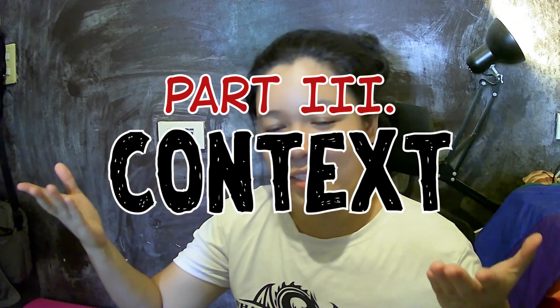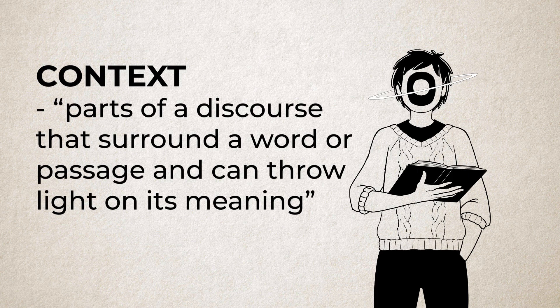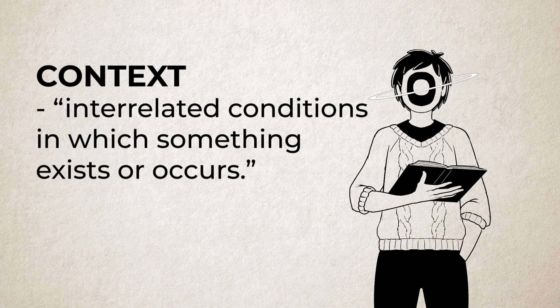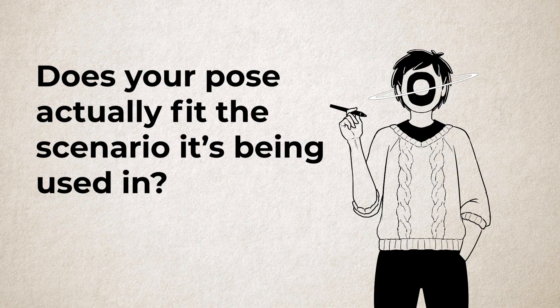Part 3: Context. We'll start with the Merriam-Webster definition first, which states that context is 'parts of a discourse that surround a word or passage and can throw light on its meaning,' or 'interrelated conditions in which something exists or occurs.' With drawing dynamic poses, that basically translates to: does your pose actually fit the scenario it's being used in? Your answer is obviously going to be yes because it's your character and no one knows them better than you. But that's just the thing — you don't, or at least not immediately. When you're at a point where you can naturally think about your OCs and every reaction to forces that come for them, then you're on top of your game.